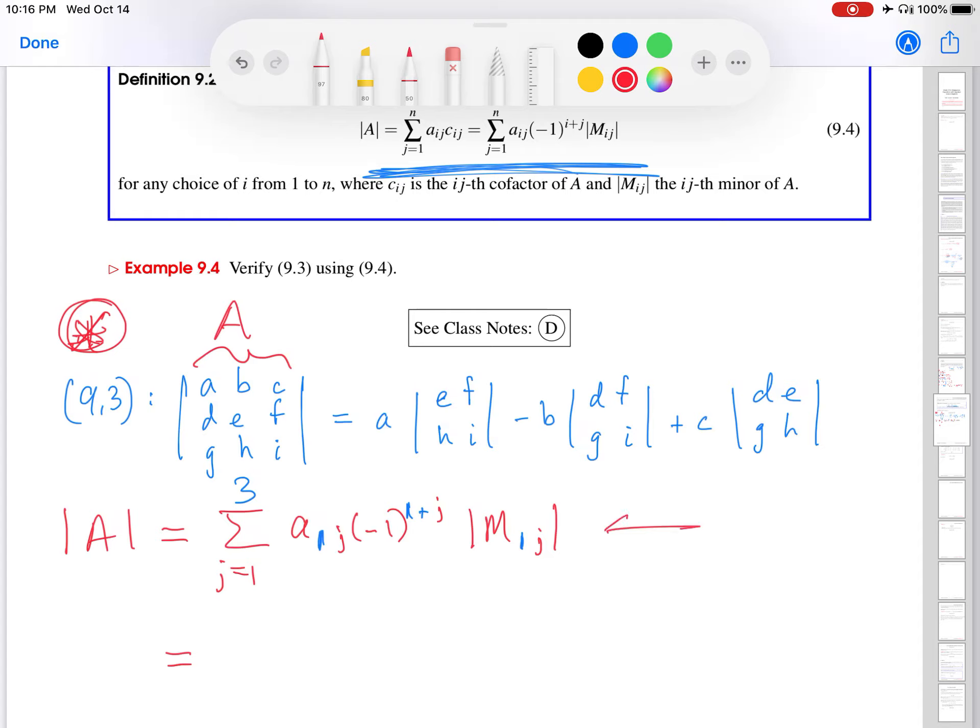Next thing I'm going to do is I'm going to actually work out this sum term by term. So the j equals 1 term is a1,1 minus 1 to the 1 plus 1, determinant m1,1. Plus the j equals 2 term, a1,2 minus 1 to the 1 plus 2, determinant m1,2. And then plus the j equals 3 term, a1,3 minus 1 to the 1 plus 3, determinant of m1,3.